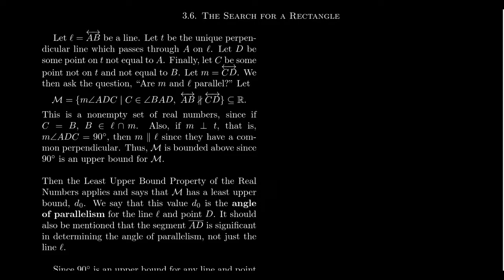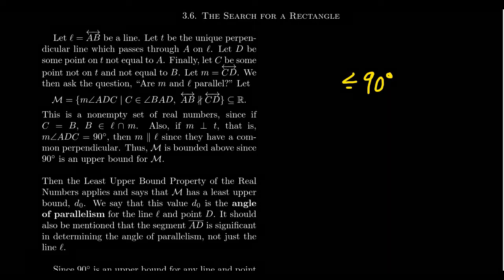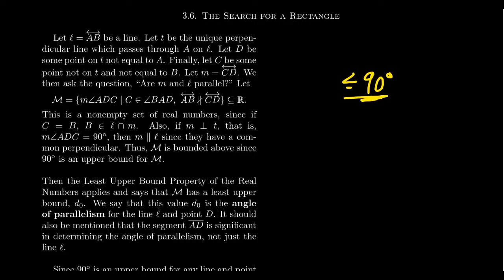While studying Saccheri and Lambert quadrilaterals, we've seen that the summit and fourth angles, respectively, must be less than or equal to 90 degrees. If those angles equal 90 degrees, that's equivalent to the Euclidean parallel postulate; if they're properly less than 90 degrees — authentically acute angles — then we're in hyperbolic geometry. So it begs the question: how small can they get? How much smaller than 90 degrees can these angles get?